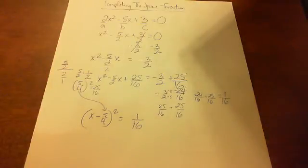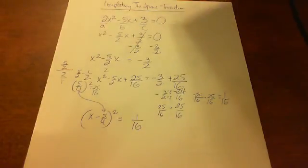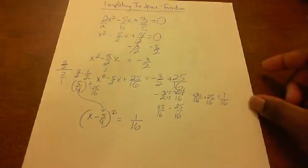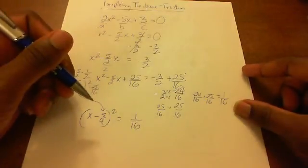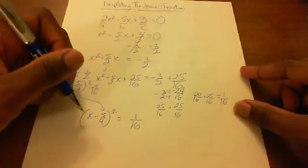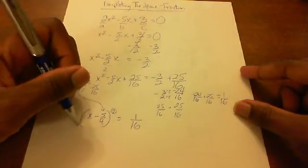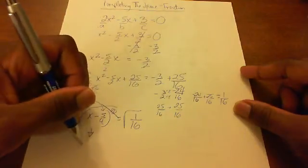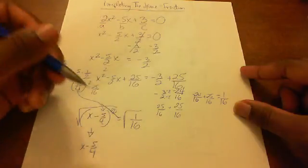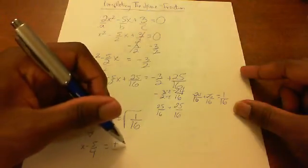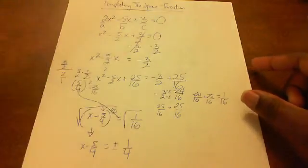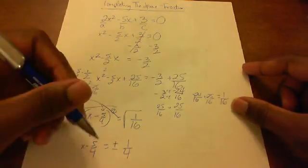The next thing we're gonna do now is simplify this. We're gonna have to square root both sides to get rid of this square. So we square root both sides, get rid of the square. We drop it: x - 5/4 = ±1/4. Square root of 1 is 1, square root of 16 is 4, so that's how we get that.